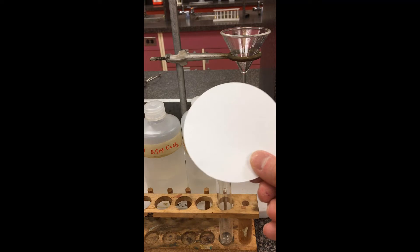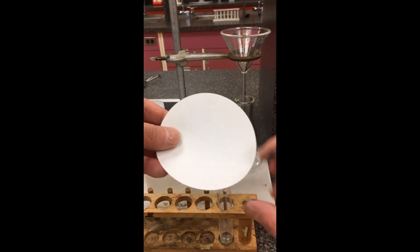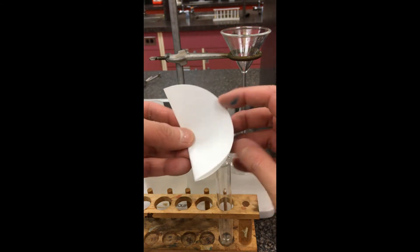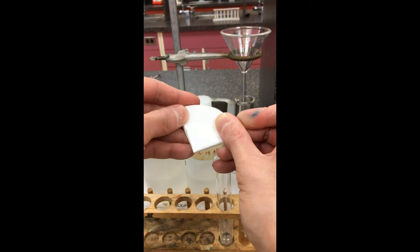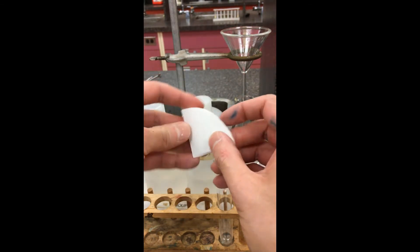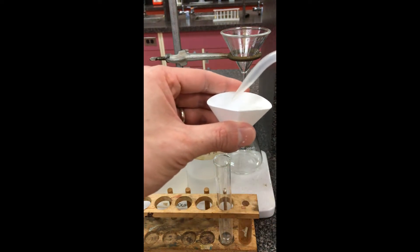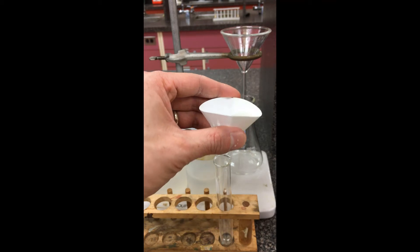So for this filter paper here, I'm going to fold it in half. We're going to fold it in half once more, creating a little cone-like shape. Usually we wet it a little bit just to make sure it can retain the shape, especially when it is in the funnel.